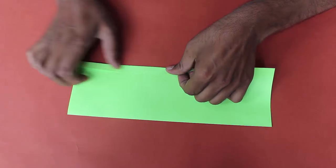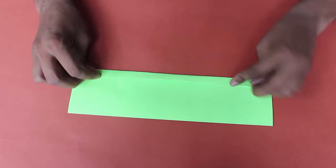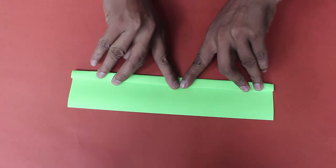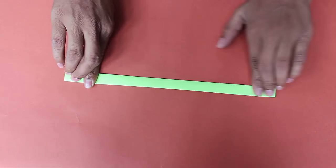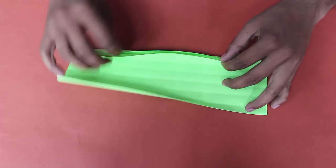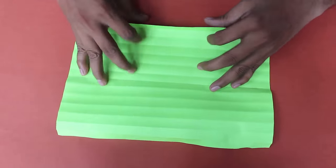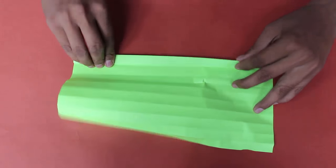Then fold both open edges into a thin strip about 1.5 cm wide. Keep folding and refolding the strip until you cover the whole width of the paper. On opening the paper you will see corrugations on the whole sheet.